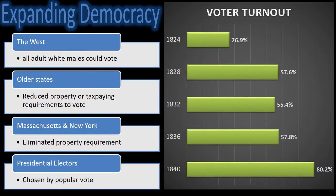The growing trend throughout the era of good feelings and the age of Jackson was the expansion of democracy. In most states, poor white male citizens were underrepresented in government, since voting required property ownership or tax paying. From 1820 to 1850, all states either limited or abolished property requirements. Presidential electors were now selected by the people.